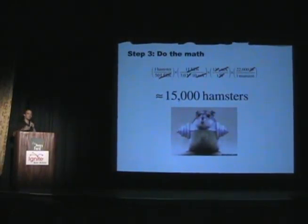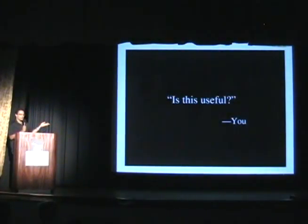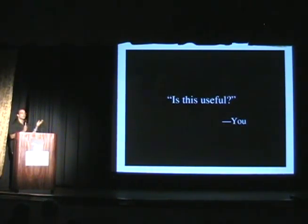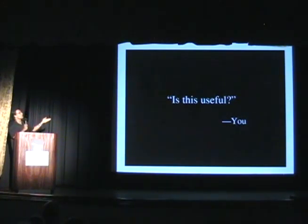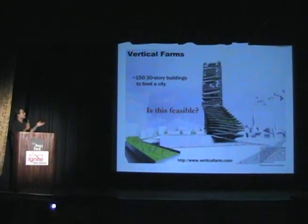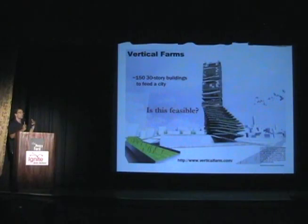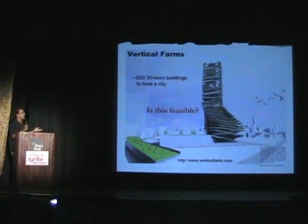Now, this is just a silly example. So there's something you're probably asking yourselves — is there any time when this is actually useful? It turns out it is. If you've been reading Wired Magazine, you might have heard of something called the Vertical Farms Project, which is a group of people saying that if you have a 30-story building and make a giant greenhouse, this is a way to make fresh green produce locally in big cities. And with 150 of these buildings, you can feed an entire city.